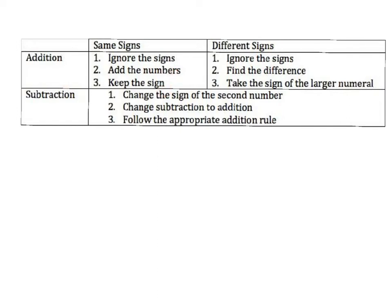However, if they're different signs — you have one positive number and one negative number — you're going to ignore the signs, find the difference (that means subtract), and then take the sign of the larger number. So if the bigger number is negative, your answer is negative. If your bigger number is positive, your answer is positive. Now, if the problem has subtraction, you're going to change the sign of the second number, then change the subtraction to addition, and then follow the appropriate addition rule — either same signs or different signs. Those are the rules for addition and subtraction.